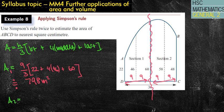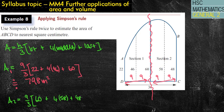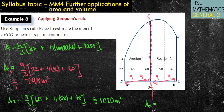Now for area 2 — the second application. We've still got 9 over 3. My first value is now 60, which was the last value of the previous one, so I can use that value again. Four lots of 58, because that's my middle, and 48 for my last value. Typing that into the calculator gives approximately 1,020 square meters. Therefore, the last step is to add those two values together, giving a total of 1,818 meters squared.